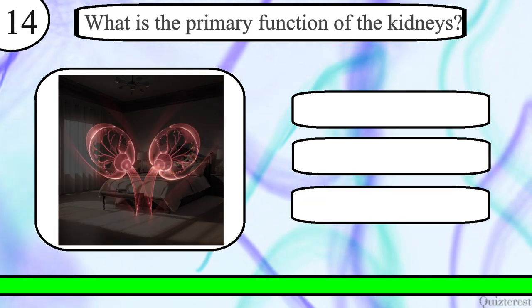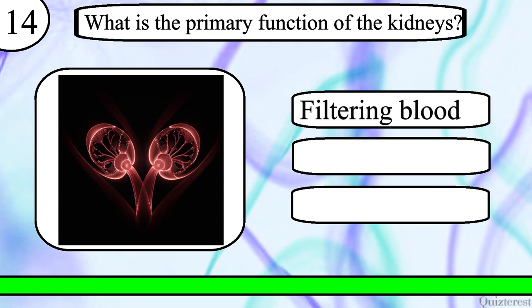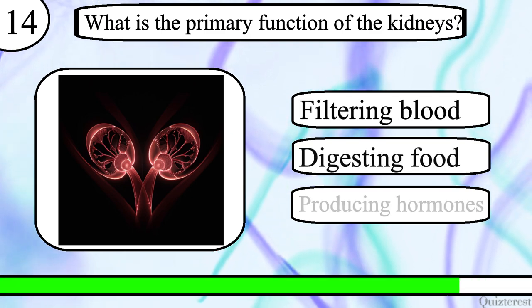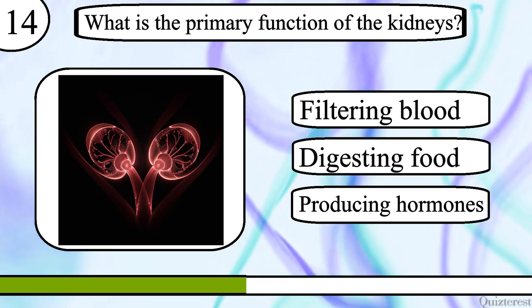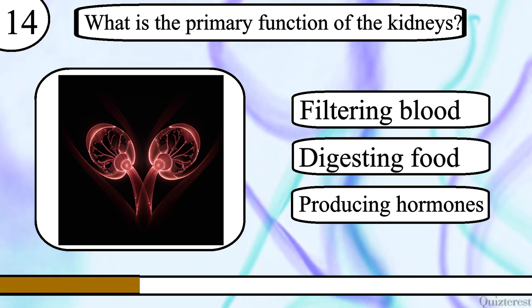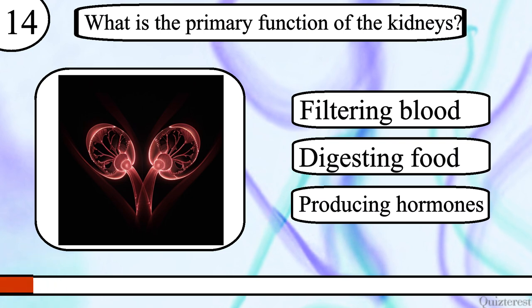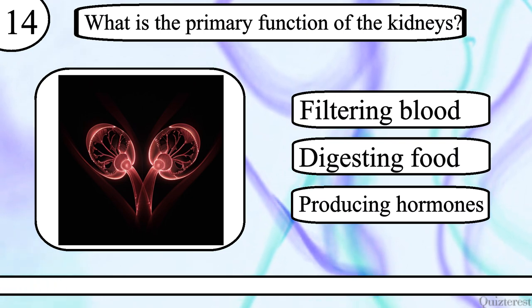Question 14. What is the primary function of the kidneys? Filtering blood, digesting food or producing hormones? The correct answer is filtering blood.